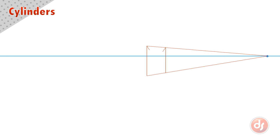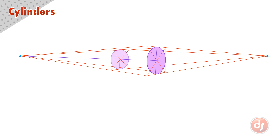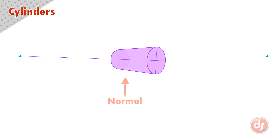Let's draw another example but make it smaller on the page so the vanishing points are farther from the object. We can see that the cylinder looks much more normal. It's always important to keep in mind the distance of the vanishing points in our perspective scenes if we want it to look natural to our eye.